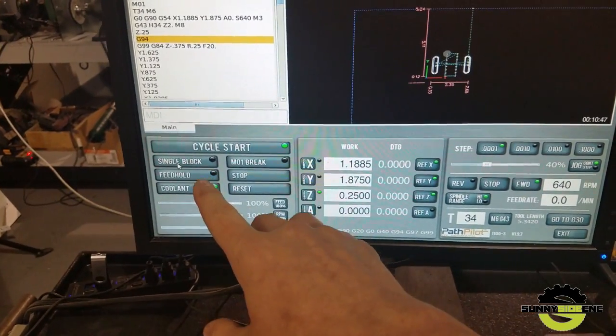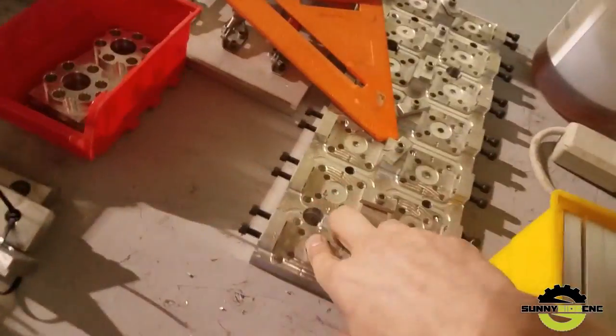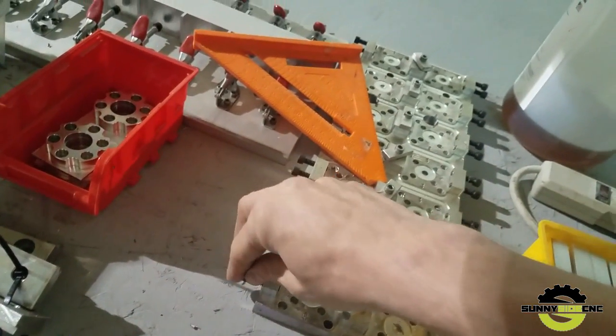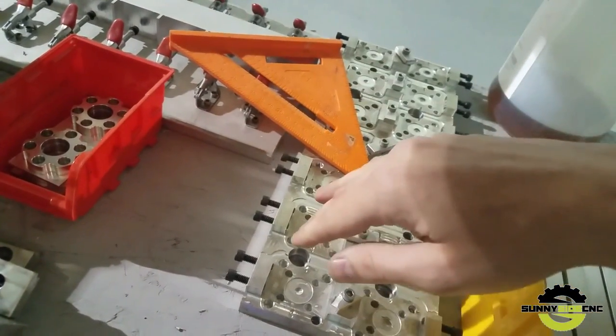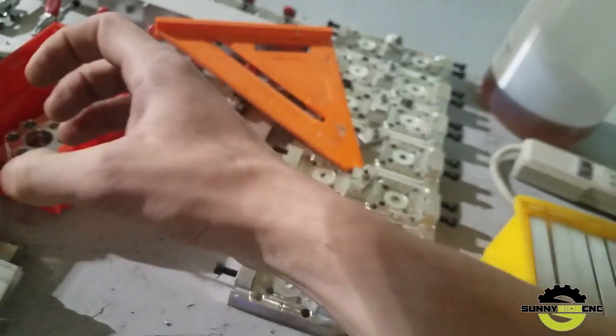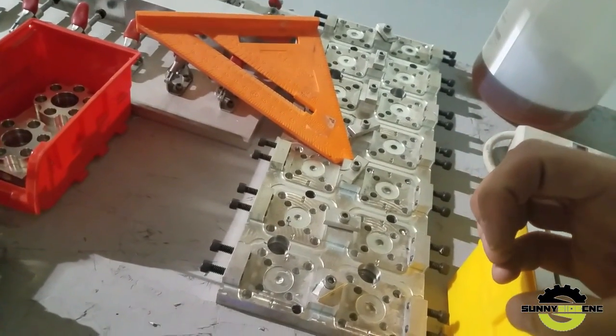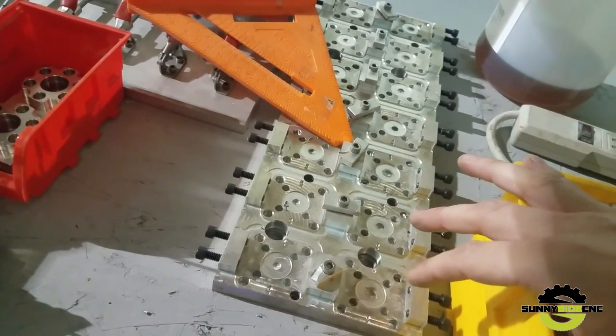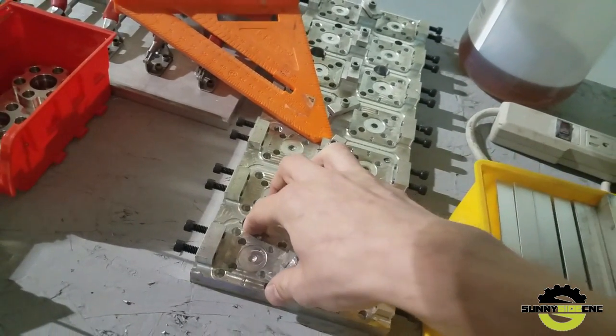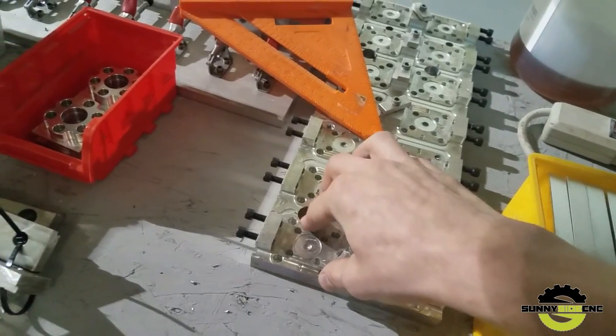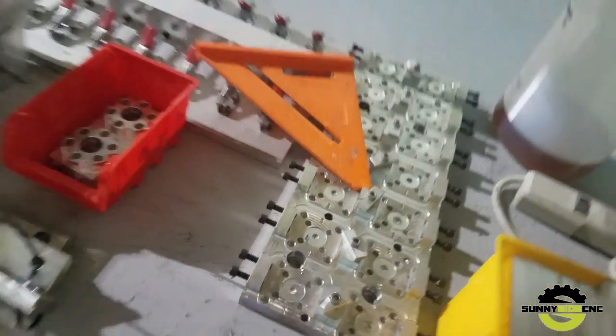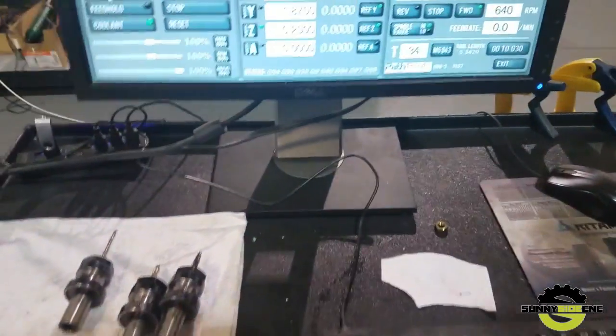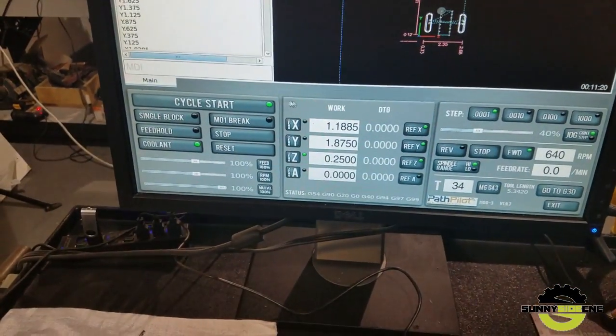Don't ever try to tap on a single block. When we were making this fixture and I was tapping the side holes on a single block, the spindle stopped on the Z-tap but it kept spinning, so it started pulling my tap in. Good thing I was quick enough to hit escape and it stopped, but otherwise it would ruin the whole fixture. So don't try to tap on a single block just to be safe. Right now I'm just gonna hit start and we'll see what's gonna happen.